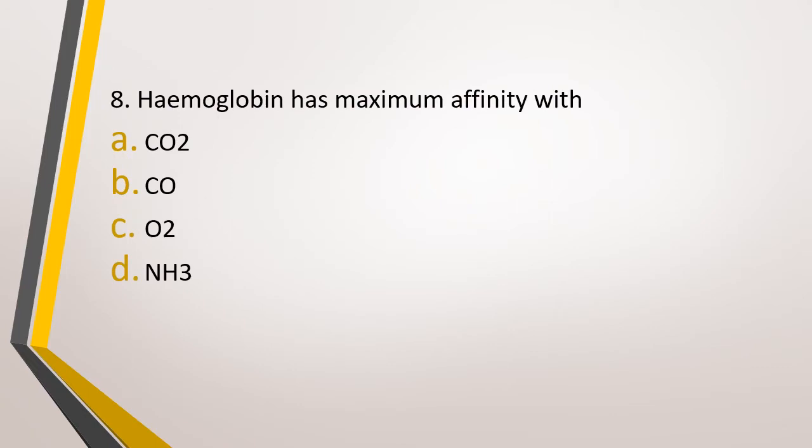Question number 8. Hemoglobin has maximum affinity with? Option A: Carbon dioxide. Option B: Carbon monoxide. Option C: Oxygen. Option D: Ammonia. The correct answer is option B, carbon monoxide. Hemoglobin has maximum affinity with carbon monoxide and the affinity with carbon monoxide is almost 4 times that of oxygen.